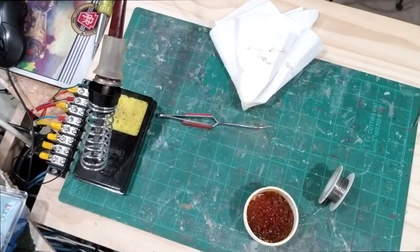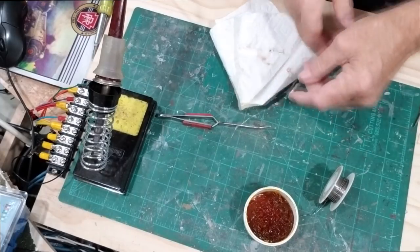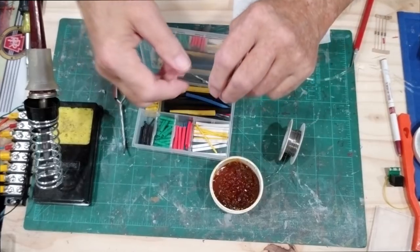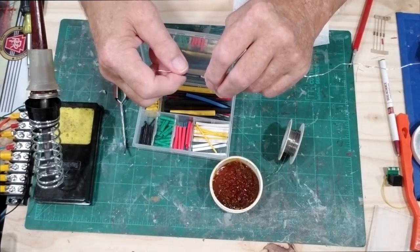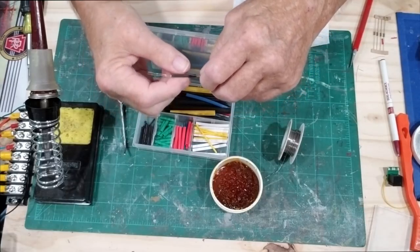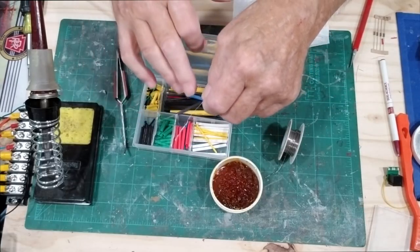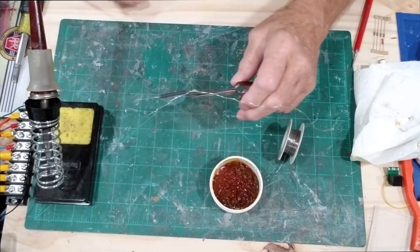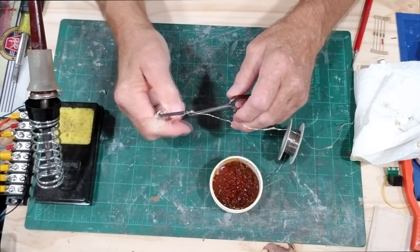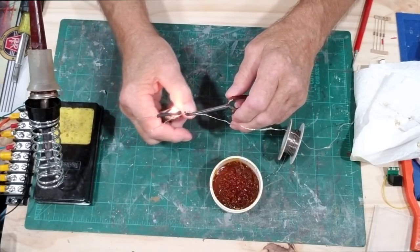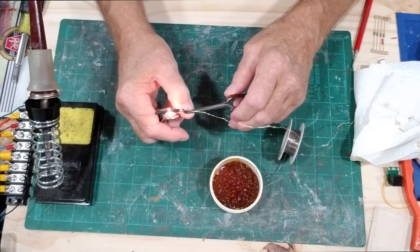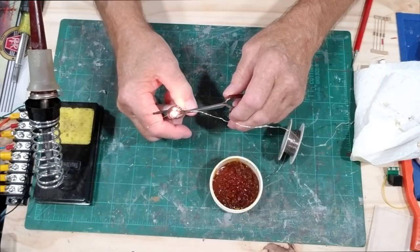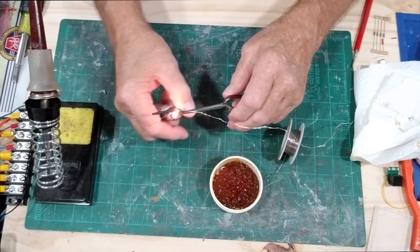Before I put the shrink tubing on we'll just make sure that this works. Okay, so it works. I have an assortment of heat shrink tubing and I found one that works perfectly. I'll put it right there and heat it up. It'll cover the resistor and the solder joint. I have four LEDs on this strip and a 68 ohm resistor so we'll just shrink this tubing up over top of the resistor and the splice.